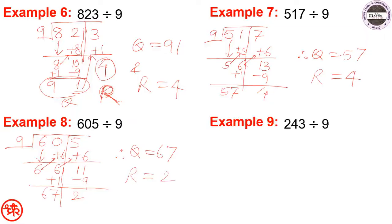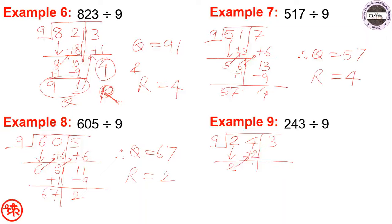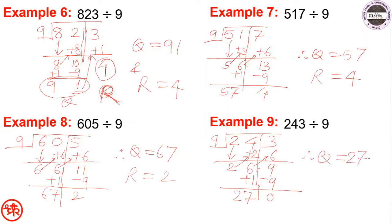Next example: 243 divided by 9. Draw vertical line then horizontal line. Put 2 below 2. Add 2 to get 6 (4 plus 2 is 6). Add 6 to get 9 (6 plus 3 is 9). Since this 9 equals the divisor 9, subtract 9 and add 1: 26 plus 1 is 27, and 9 minus 9 is 0. Therefore quotient equals 27 and remainder equals 0.